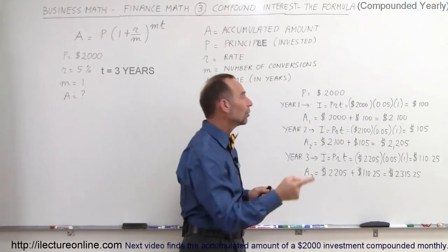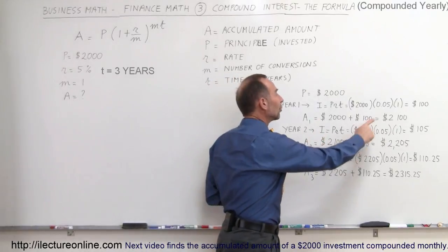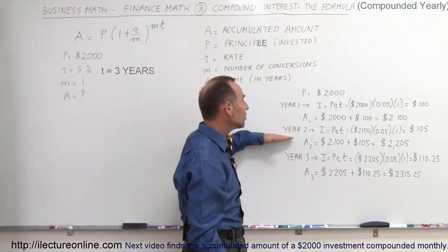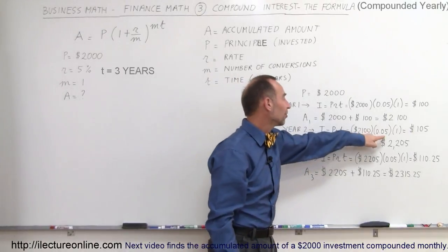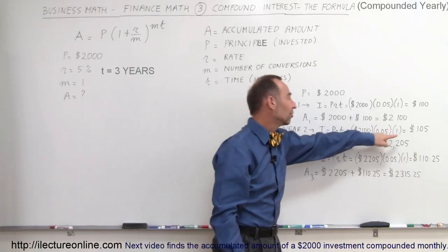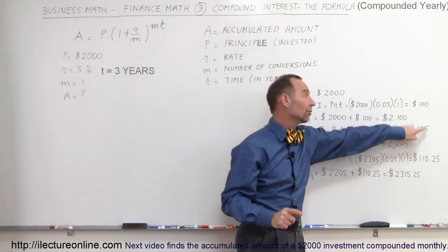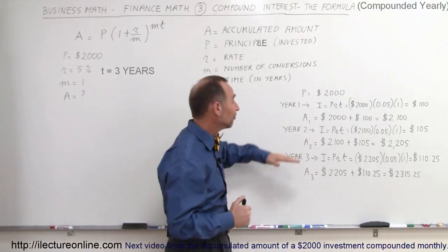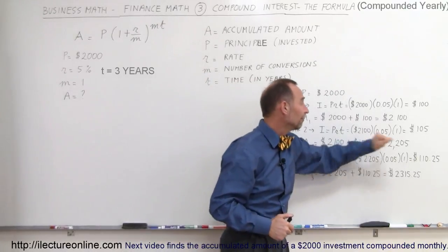The second year, you earn interest not only on the original $2,000 but also the additional $100 you earned the first year. So in the second year, the interest earned will be 5% of $2,100, and therefore you earn $105 of interest instead of $100. That gets added to the amount you have, so you have a total of $2,205.